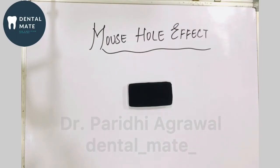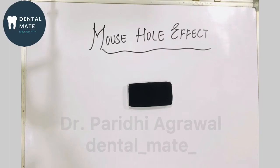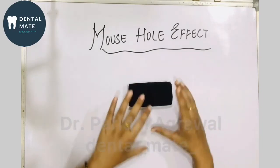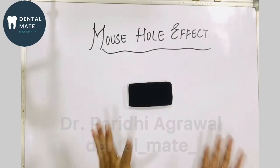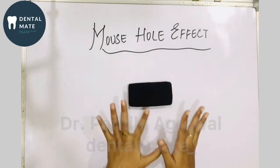Hello everyone, welcome to my YouTube channel. This is Dr. Paree, your dental mate, sharing simplified versions of dental learning. Today in this video we will be talking about something called the mouse hole effect. Now, in the law of orifice location first and second, the orifices are always located in the floor-wall junction.